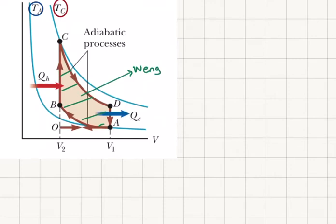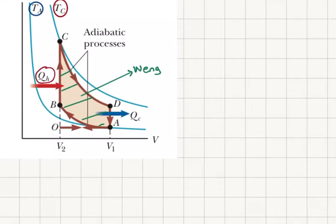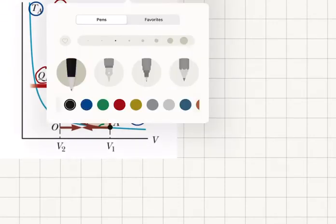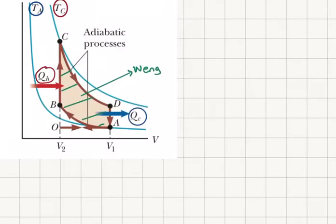W engine will be the output. Going from point B to point C is going from a lower temperature isotherm to a higher temperature isotherm, so this is where QH is absorbed and enters the cycle. Going from D to A, we go from a higher temperature isotherm to a lower one — D is at a higher temperature — so this is where I'm releasing heat to the cold reservoir.